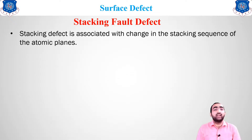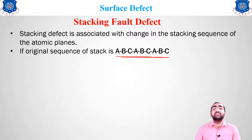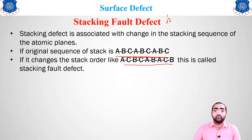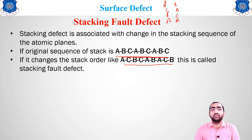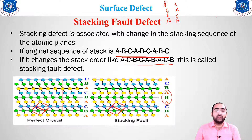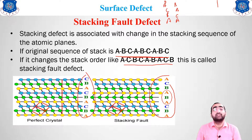The last surface defect is the stacking fault defect. Stacking fault refers to a disruption in how atomic planes are arranged. The original stacking sequence is ABC ABC type, but due to certain reasons there is a change — for example, it becomes ACB CAB ACB, meaning the ABC ABC sequence is disrupted. You can see the normal ABC ABC type crystal and where it has been replaced by a changed arrangement — that is known as a stacking fault defect.